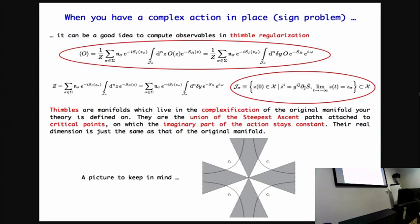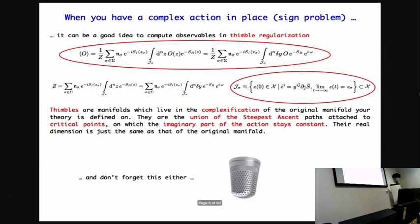The good point of this basis provided by the thimble is that over them, the imaginary part of the action stays constant. Also, these n combinations, the coefficients of the linear combinations, they are integral. Okay?